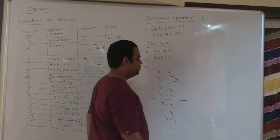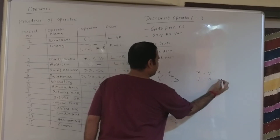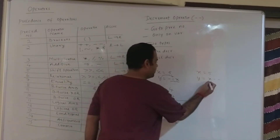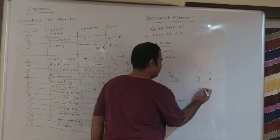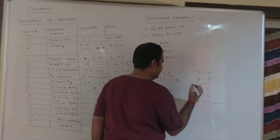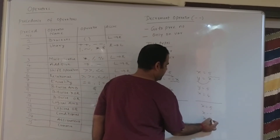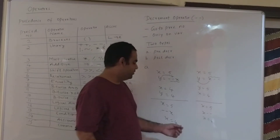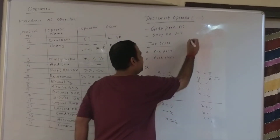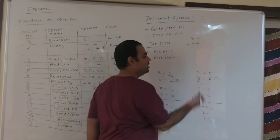The second type is post-decrement. For example, x is equal to 5 and y is equal to x minus minus. Here minus minus appears after the operand, so it is called post-decrement. First, the assignment takes place — the value of x (5) is copied to y. Then the decrementation takes place and the value of x becomes 4. If x is equal to 5 and we write x minus minus, x becomes 4. Writing 4 minus minus is an error because it cannot be applied on a constant. Similarly, minus minus 4 is also an error.